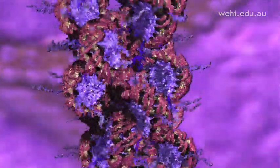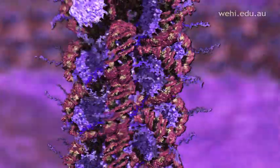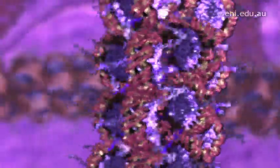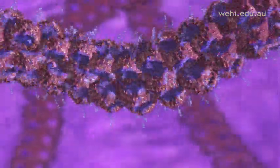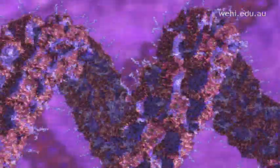The nucleosomes are packaged into a thread. The end result is a fiber known as chromatin. This fiber is then looped and coiled yet again.